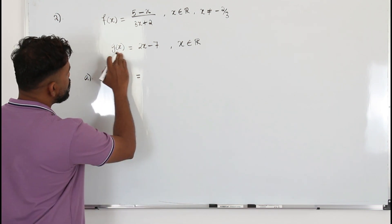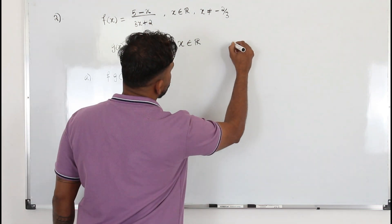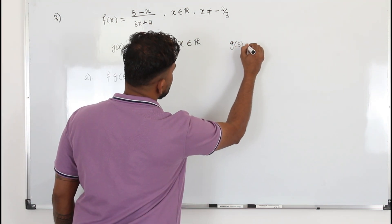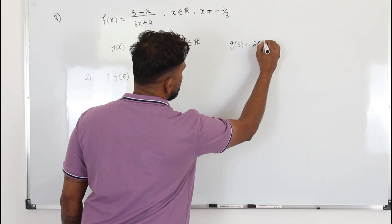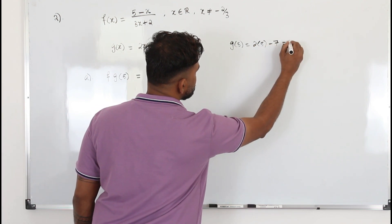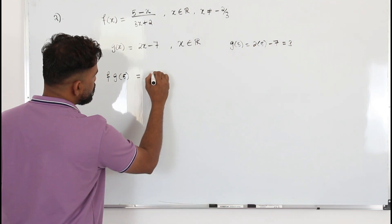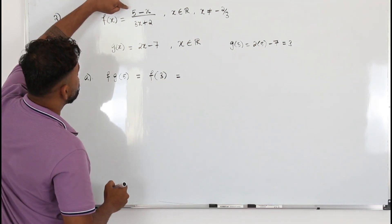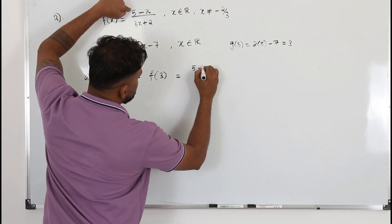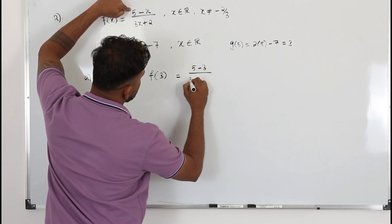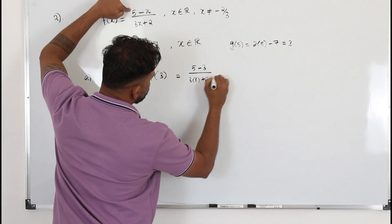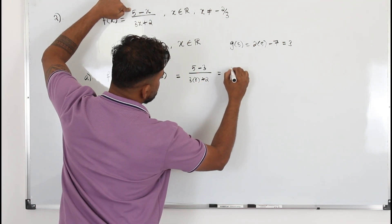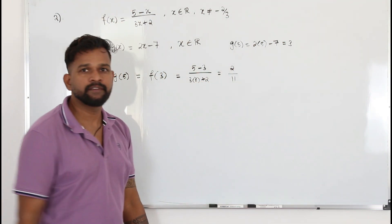So first you need to find g(5). g(5) is going to be 2 times 5 minus 7, which is 10 minus 7 equals 3. So this is going to be f(g(5)), which is 3. Now in this function, replace x by 3. (5 - 3) / (3 times 3 + 2), which is 11, so 2 over 11. That's the answer.